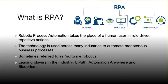First, I'm going to talk about what RPA is. RPA takes the place of a human user on rule-driven repetitive digital actions, and sometimes it's referred to as software robotics. Technology is used across many industries, and it takes the monotonous processes done by humans and automates them. These software robots perform set tasks or rules in a fraction of the time without the implication of human error. The leading players in the industry are UiPath, Automation Anywhere, and Blue Prism.